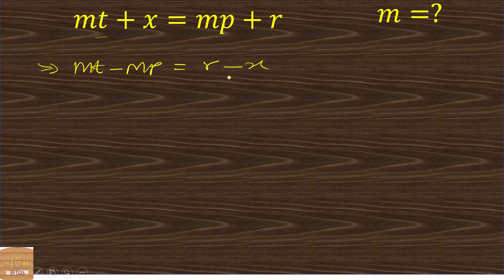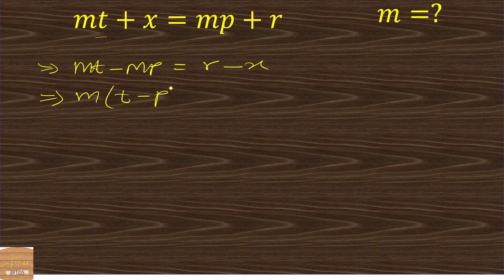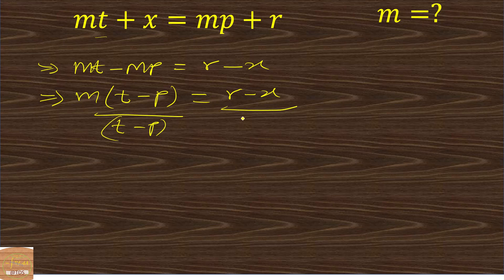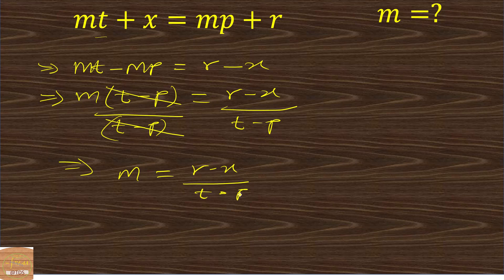Bringing mp to the left gives mt minus mp equals r minus x. We can now factorize m out: m times (t minus p) equals r minus x. To make m the subject, we divide both sides by (t minus p), giving m equals r minus x over t minus p.